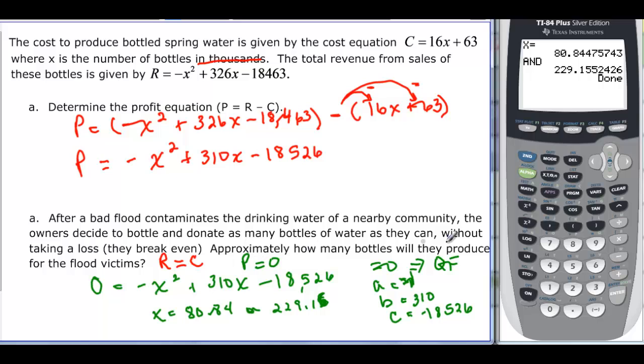How many approximately will they produce? We would want to say then that they're going to have 229.16 thousand bottles, because remember it was in thousands.